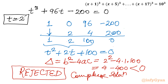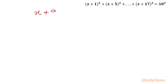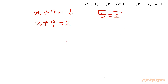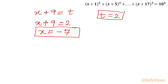The only solution we accept is t = 2. Substituting back: x plus 9 = t = 2, so x = 2 - 9 = -7.